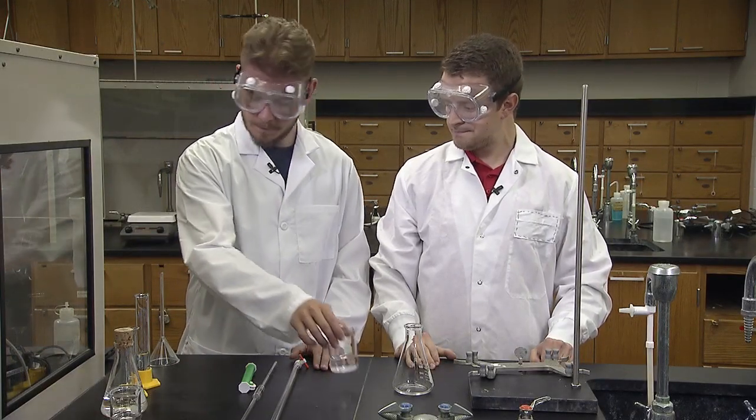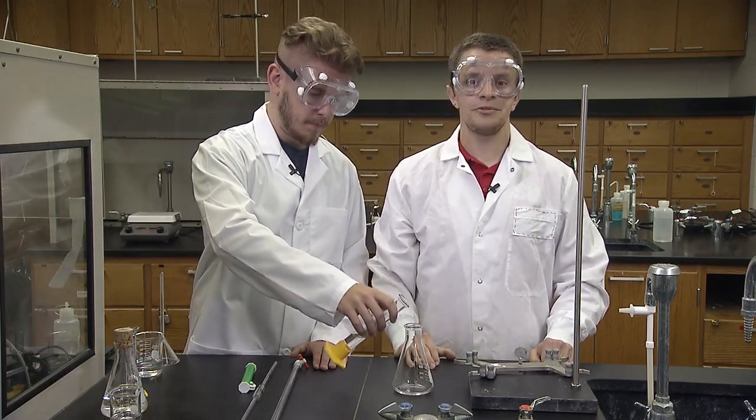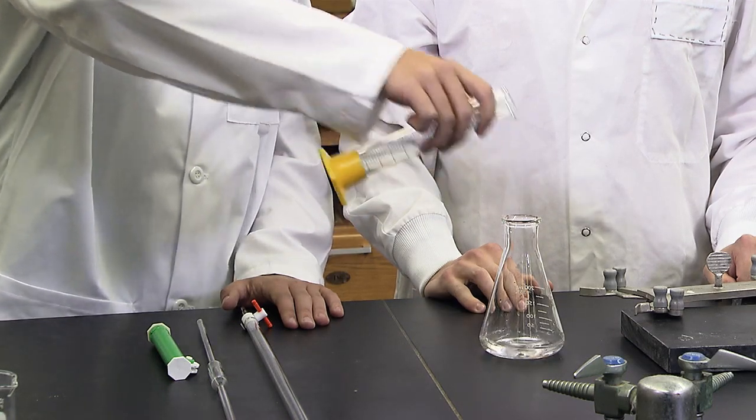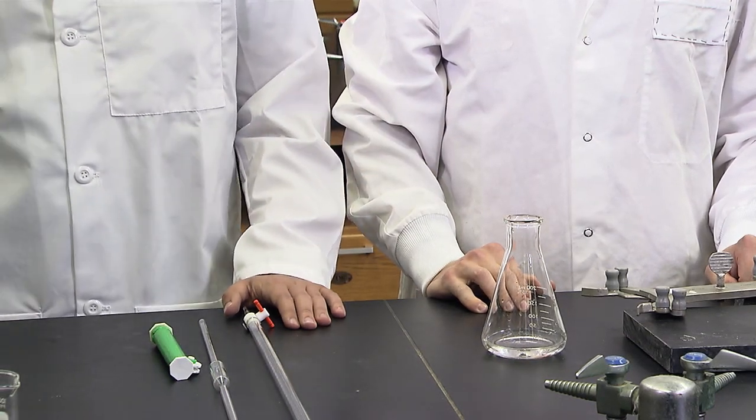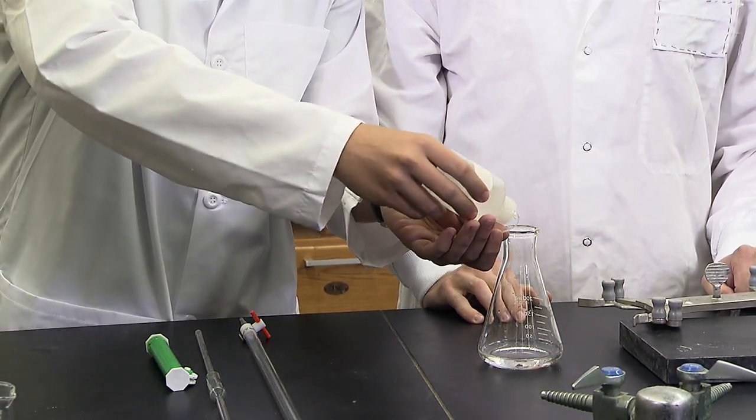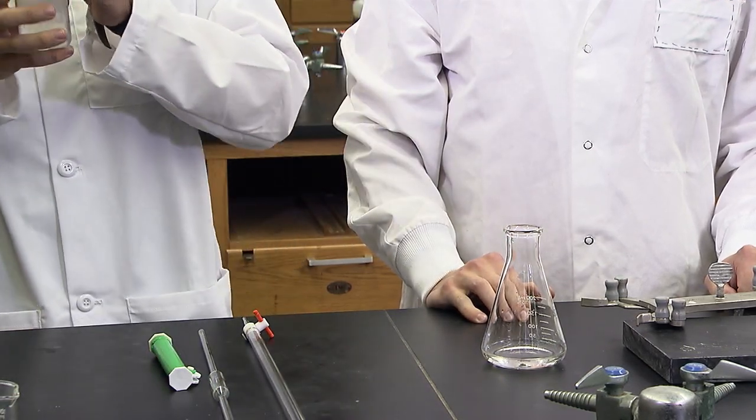Remember, never pipette out of the stock bottle. Add 20 milliliters of DI water and a couple drops of indicator. This flask is now ready for the experiment. You will prepare two more flasks like this later in the lab. We'll set this flask out of the way while we prepare the burette.